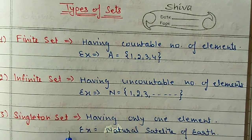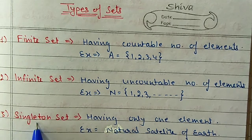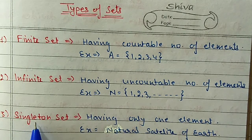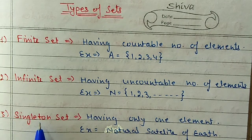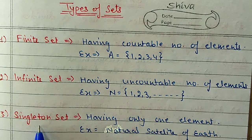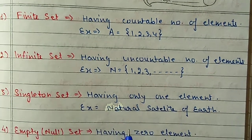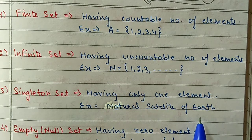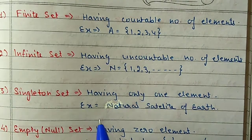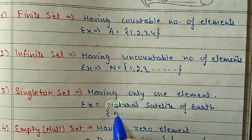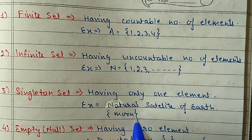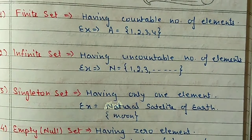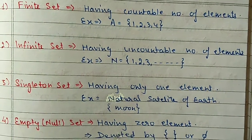The third type of set is the singleton set. By the name it is clear - single means if a set has only one element, we call it a singleton set. For example, the natural satellite of Earth. How many natural satellites are there for Earth? Only one. The natural satellite of Earth is the Moon. So when you get only one element as an answer, that is a singleton set.